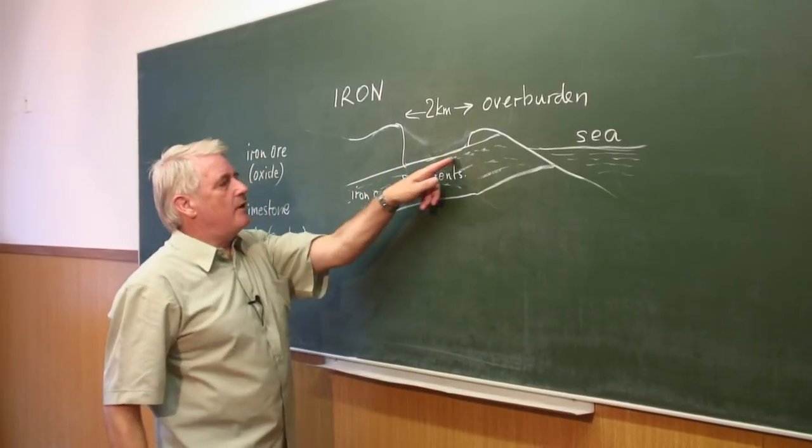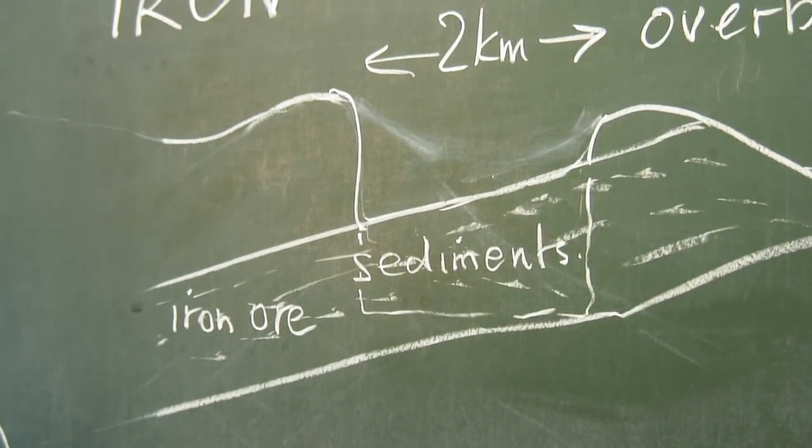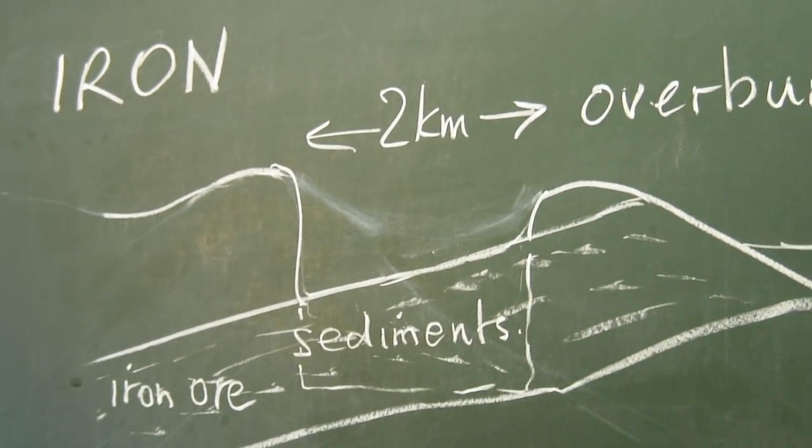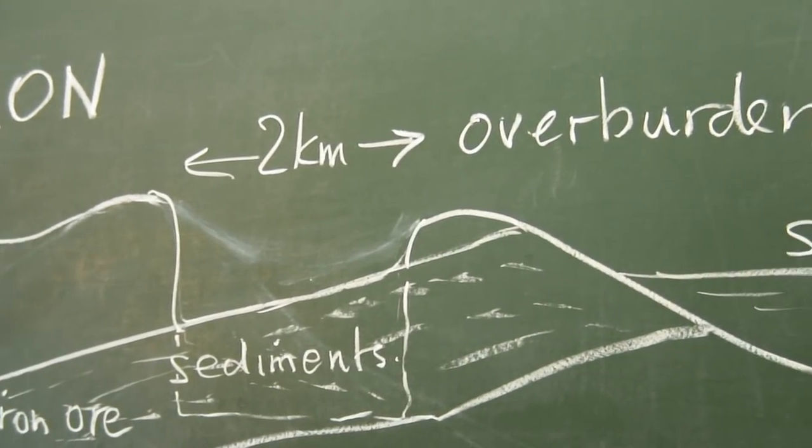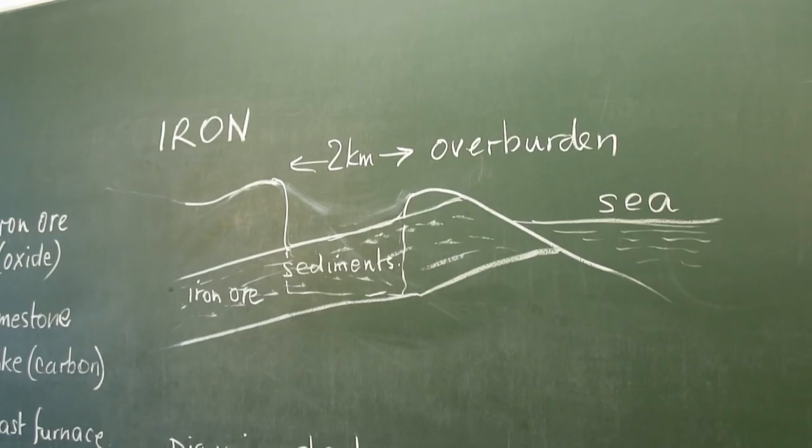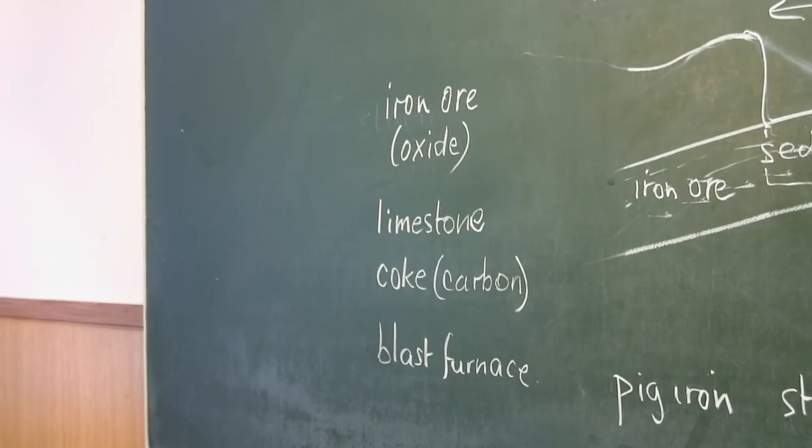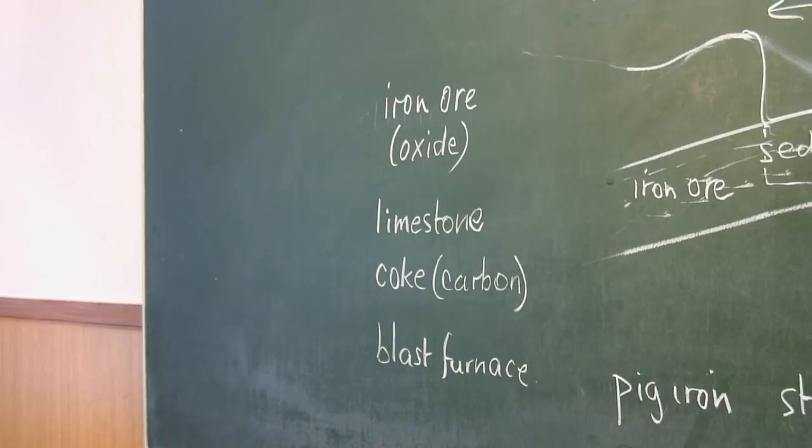And then we get down to what we do want, which is the iron ore. We then dig this away and take it to a processing plant, where there are blast furnaces which turn it into iron.